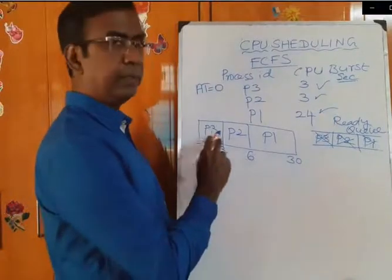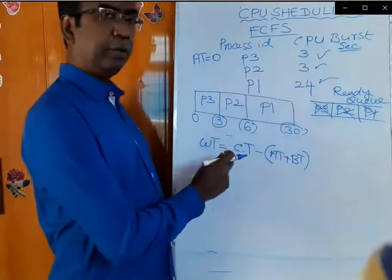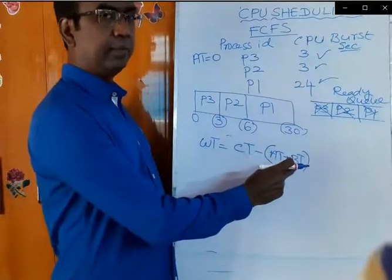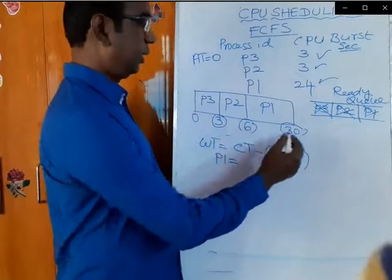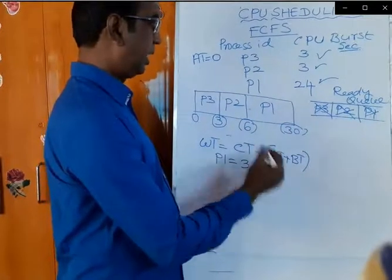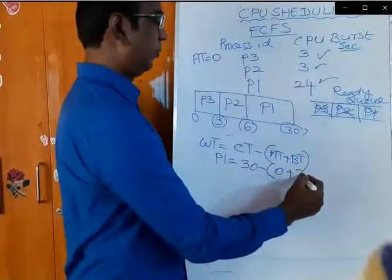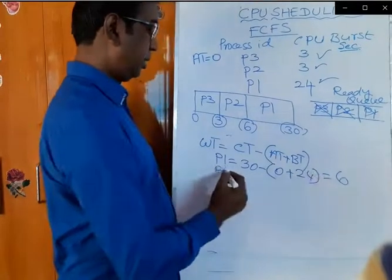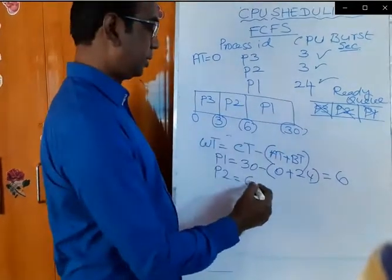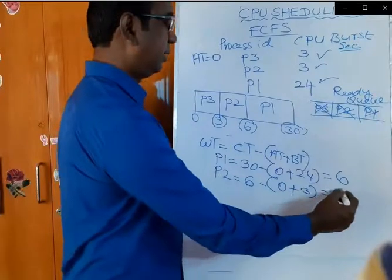This is the Gantt chart for processes P3, P2, and P1. Now let us see the waiting time for each process. Waiting time equals completion time minus arrival time plus CPU burst time. For process P1: completion time is 30, minus arrival time 0, plus CPU burst time 24 — so 30 minus 24 equals 6. For process P2: completion time is 6, minus arrival time 0, plus CPU burst time 3 — so 6 minus 3 equals 3.